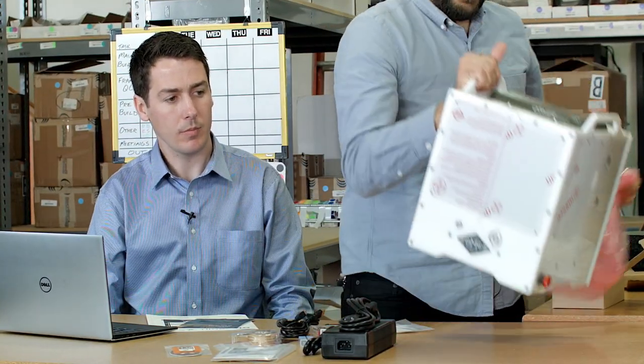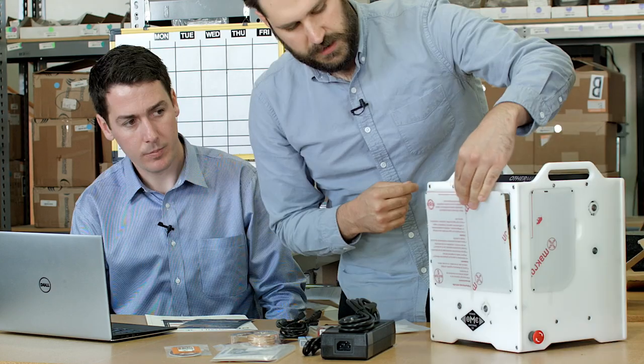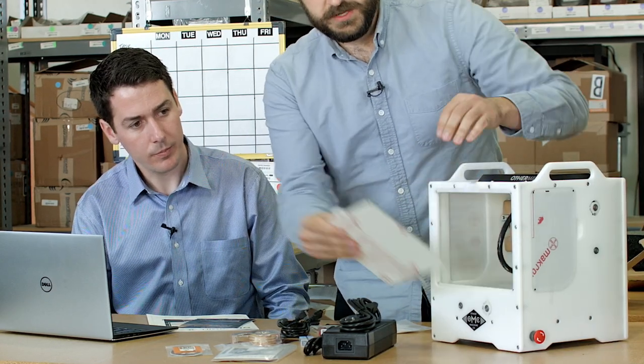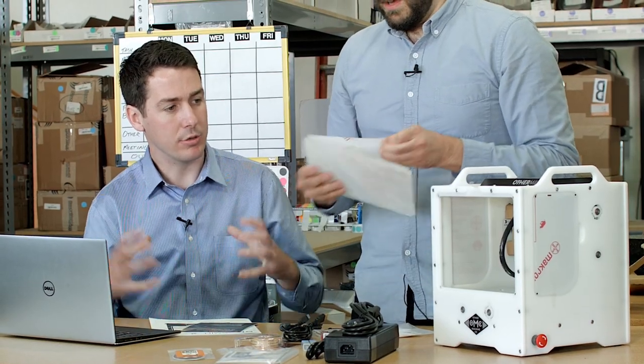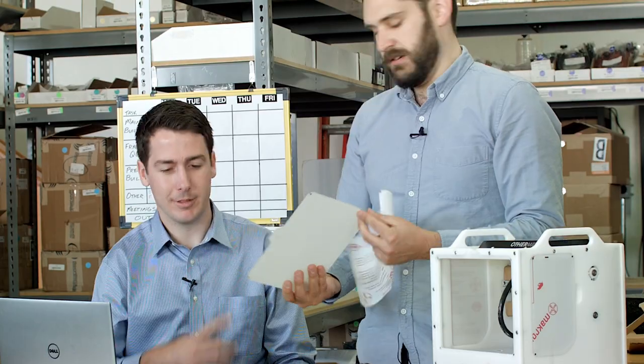Take out the Othermill Pro. The Othermill comes with four safety windows and they come with a protective film. Keep all the chips right inside and keep your hands out while it's operating.